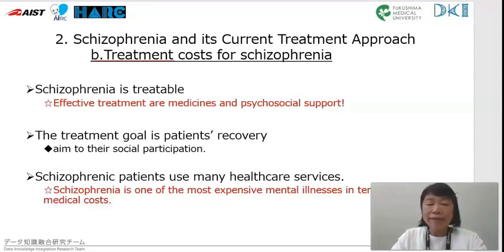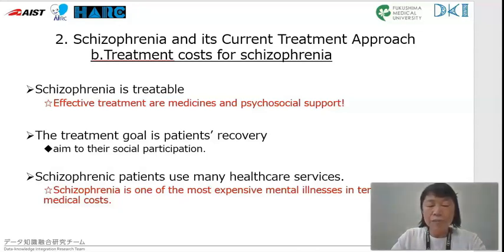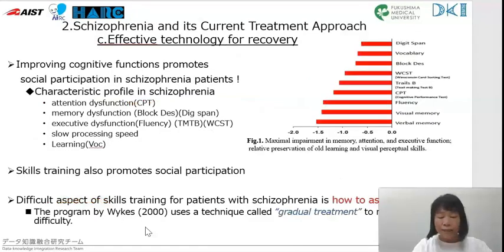Schizophrenia is treatable and treatment involves combinations of medications, psychological treatment, and support from the community for daily life. The treatment goal is patient recovery, which refers to social participation. Facilitation of assisted living, supported housing, and supported employment are effective management strategies. However, schizophrenia is one of the most expensive mental illnesses in terms of total costs. Neurocognitive abilities, rather than clinical symptoms, hinder social participation.